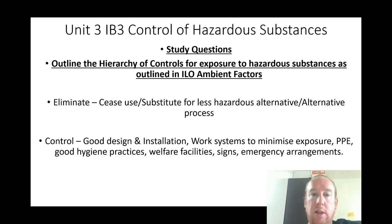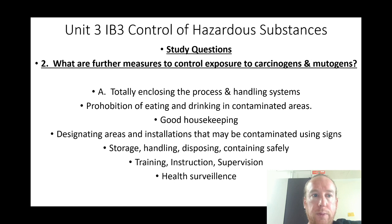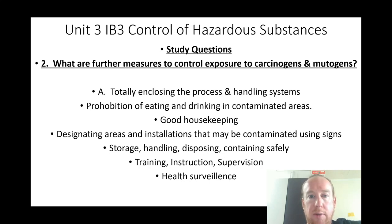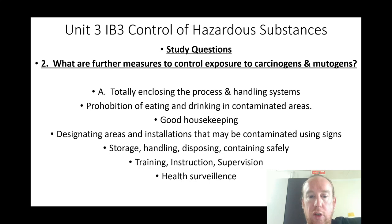What are further measures to control exposure to carcinogens or mutagens? Totally enclosing the process and handling systems if reasonably applicable; prohibition of eating and drinking in contaminated areas; good housekeeping; designated areas; using signs; safe storage, handling, disposal, and containment; training, instruction, supervision, health and surveillance.